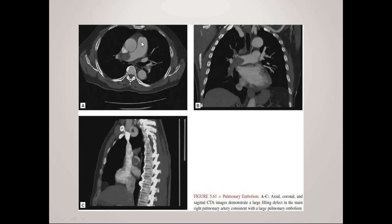Here we can see a CT image showing the pulmonary artery, ascending aorta, descending aorta, and the pulmonary artery bifurcating into right and left branches. There is a central dark area representing the embolus within the pulmonary artery — this is the CT sign of pulmonary embolism.